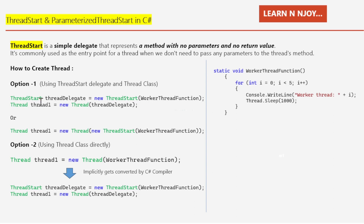These two statements can be combined into one: Thread thread1 = new Thread(new ThreadStart(WorkerThreadFunction)). For option two, we can create the thread directly using the Thread class: Thread thread1 = new Thread(WorkerThreadFunction), passing the method name directly. The C# compiler will implicitly convert this to the two-statement version for us.